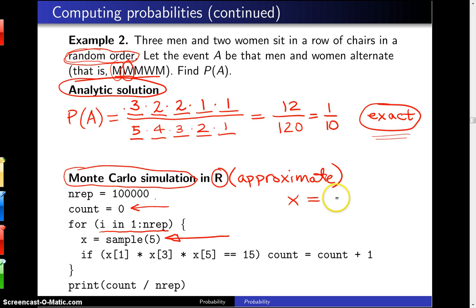So, for example, x might get set to 1, 3, 4, 5, 2. That's one possible permutation that could get assigned to x.